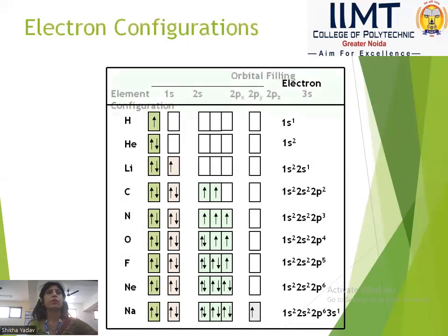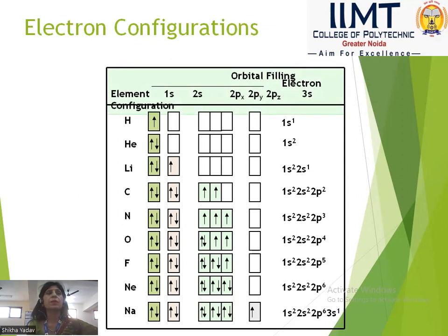Now we show the electronic configurations of several elements. You can see hydrogen, helium, lithium, carbon. Nitrogen is 1s², 2s², 2p³. Oxygen is 1s², 2s², 2p⁴.